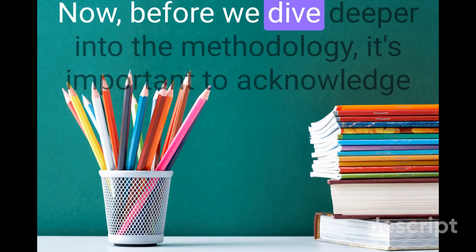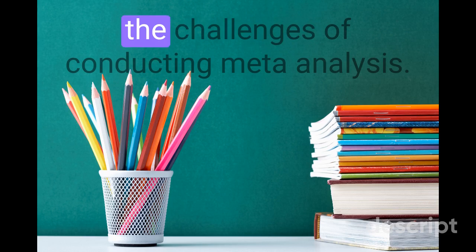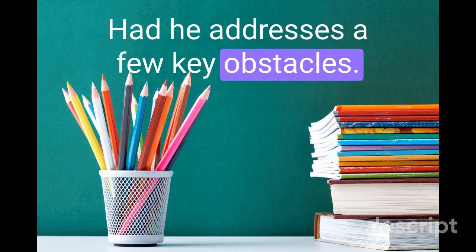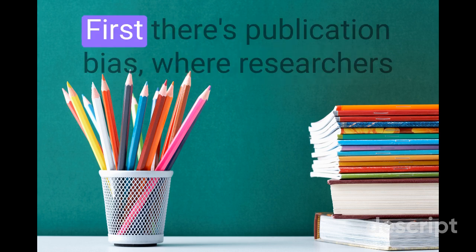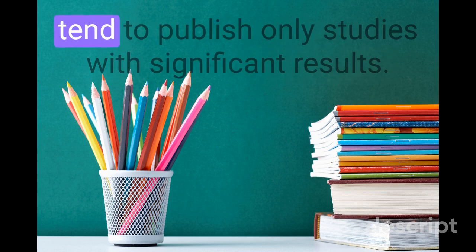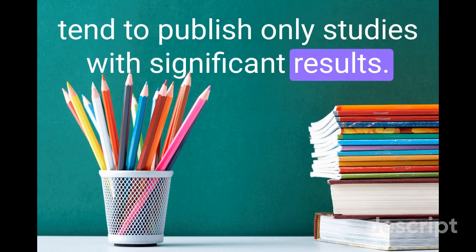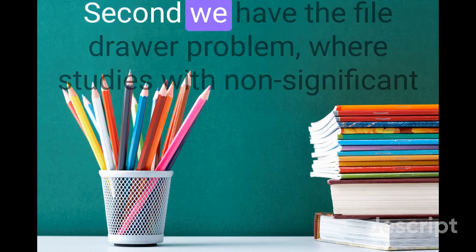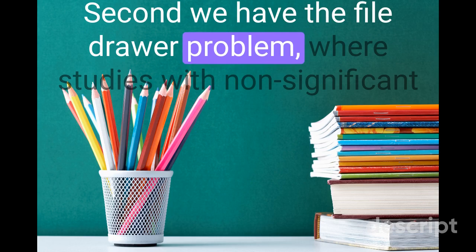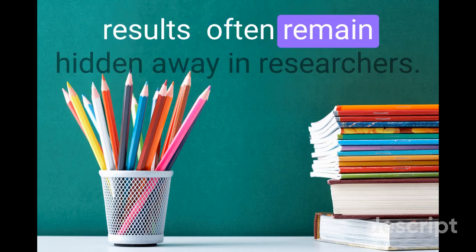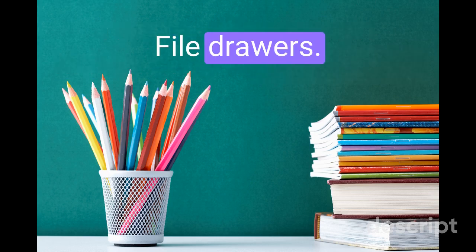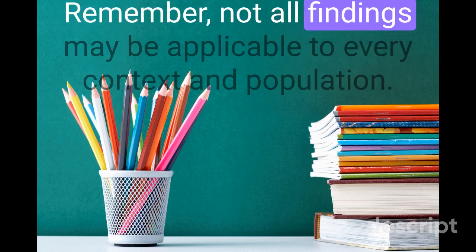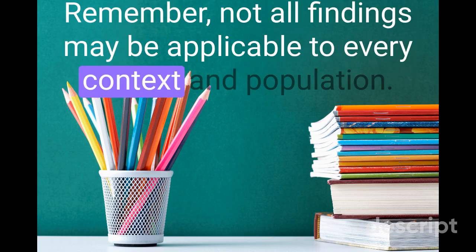Before we dive deeper into the methodology, it's important to acknowledge the challenges of conducting meta-analysis. Hattie addresses a few key obstacles. First, there's publication bias, where researchers tend to publish only studies with significant results — it's like highlighting only the hits and ignoring the misses. Second, we have the file drawer problem, where studies with non-significant results often remain hidden away in researchers' file drawers. And finally, there's the issue of generalizability — not all findings may be applicable to every context and population.